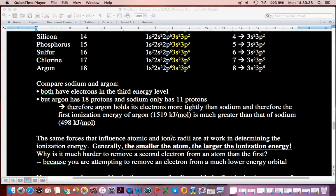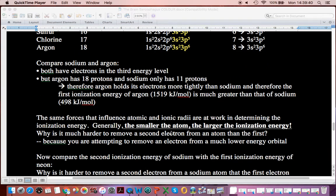Same thing going down a group. As you go down a group, what you're going to find is the atoms are getting bigger, so the ionization energy gets smaller. It's easier to remove an electron.